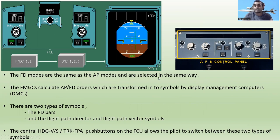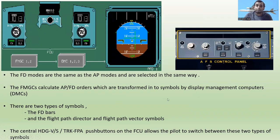The flight director modes are the same as the autopilot modes and are selected in the same way. You can see the autoflight system control panel. The Flight Management Guidance Computers calculate autopilot and flight director orders, which are transformed into symbols by the Display Management Computers — DMCs. I previously said 'distance measuring computers,' but the correct term is Display Management Computers.